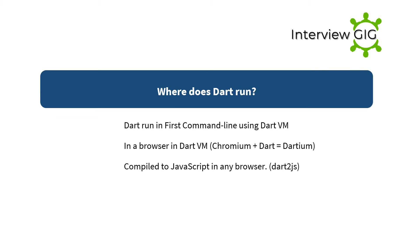Where does Dart run? Dart runs in the command line using the Dart VM, in a browser via the Dart VM in Chromium, and compiled to JavaScript using dart2js, which runs in any browser.